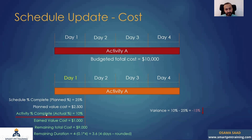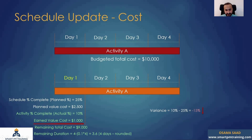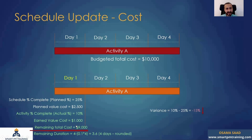The activity percentage complete comes from site. As per the progress data, it's only 10%, so clearly we are in delay. We are supposed to have 25%, but we did only 10%. The earned value cost in this case is $1,000 — that's 10% completed times the total cost. The remaining total cost is $10,000 minus the earned value cost, giving us $9,000 left to claim.